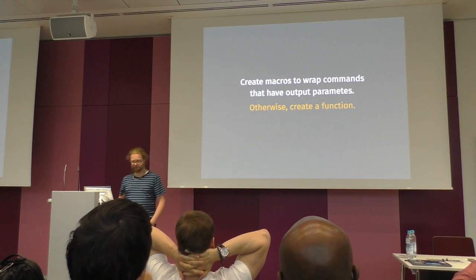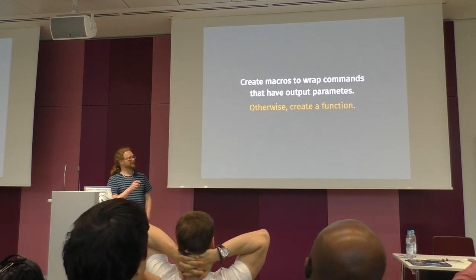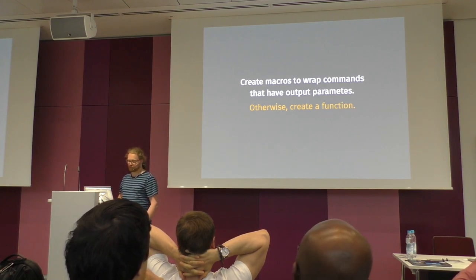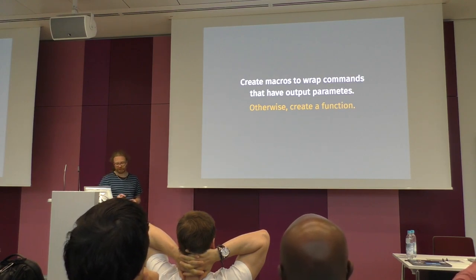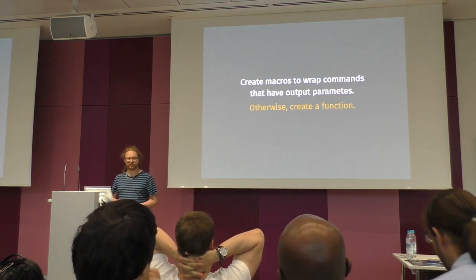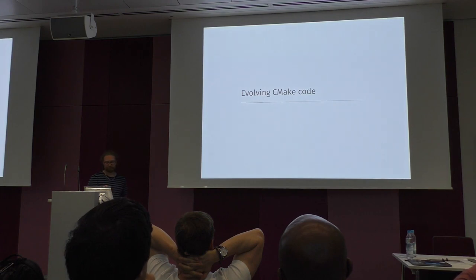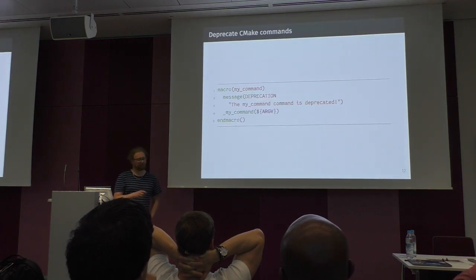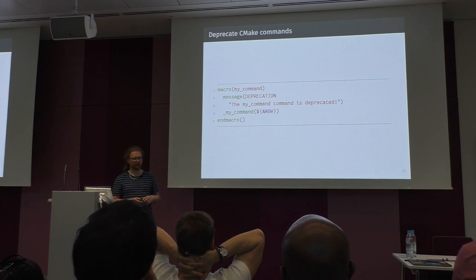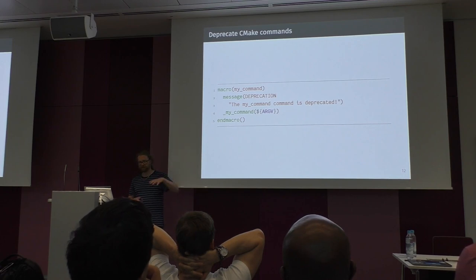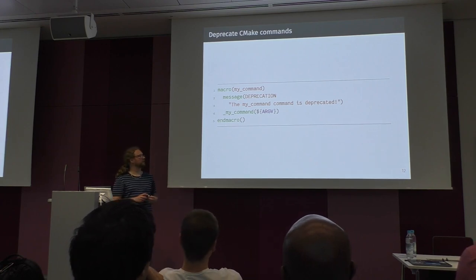At some point you may realize it was a bad idea to add a command. You can remove the command, but it may be used all over the code base and everything breaks. You would need some way of deprecating a command. We can wrap our command with a macro, issue a deprecation message, call the original command inside, and forward the list of arguments — because we wrapped it with a macro, it has the same side effects.